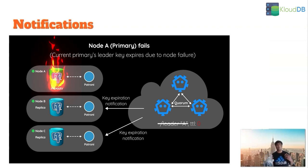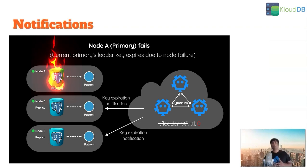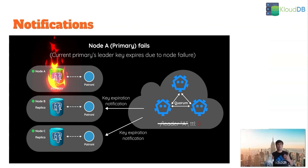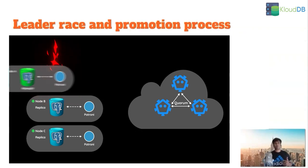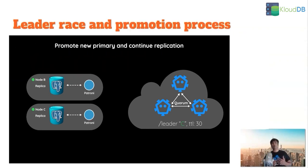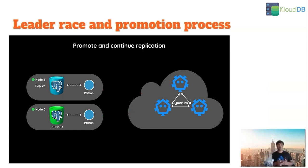Once that notification is sent by etcd, several things happen in the background. Each of the Postgres nodes checks the status of other nodes using the REST API, and the WAL position is also checked. For example, one replica may have zero lag while another has some replication lag — the replica with zero lag is chosen as the leader. Both replicas participate in the leader race; in this case node C succeeds and acquires the leader key.